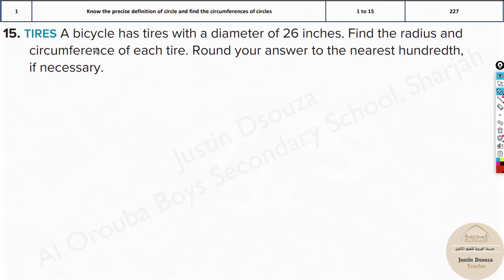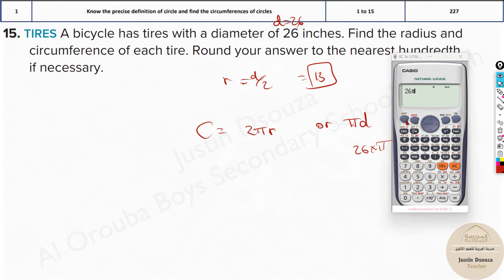Now we have a real-life situation. A bicycle has tires with a diameter of 26 inches. Find the radius and circumference of each tire. They have given the diameter equals 26. First, find the radius, so just find the radius, that is D by 2, that's 13 directly. And now you can find the circumference. Circumference is given by 2πR, or you can use the formula π times diameter. I would go with πD. It will be 26 times π. That's the answer.